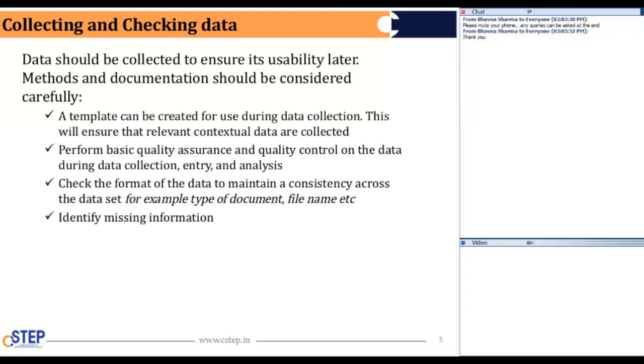Check the format of the data to maintain a consistency across the dataset. For example, like the last slide I mentioned, that for the C-STEP, we use a file naming convention. For example, the C-STEP underscores your file name underscore the date. So, for that, you have to maintain a consistency throughout your documentation. Then, identify the missing information.